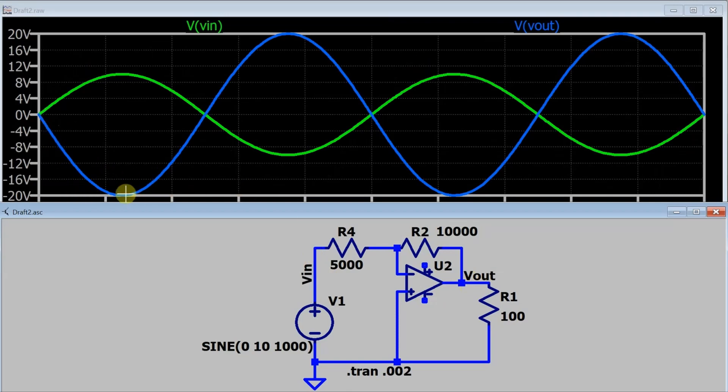Minus 20 volt negative peak, 20 volt positive peak. So there you can see the effect of this inverting amplifier circuit.